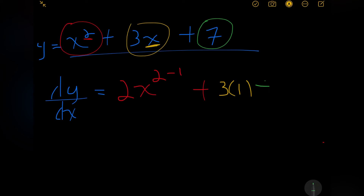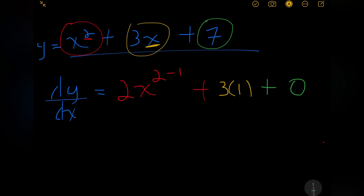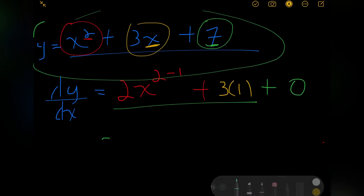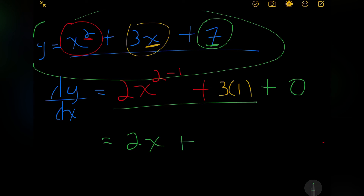For our last term, 7, we know from previous examples that the derivative of a constant is equal to 0, and we proved this using first principles as well. So the derivative of 7 is 0. Therefore, the derivative of the entire function y is 2x plus 3.